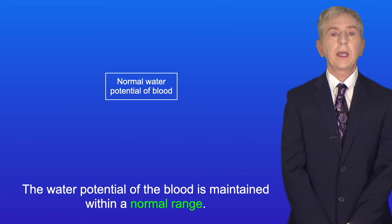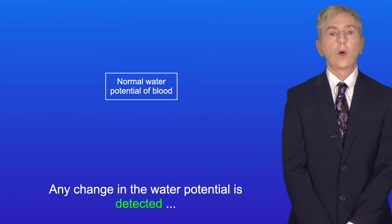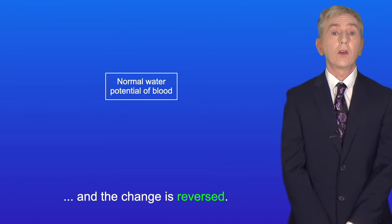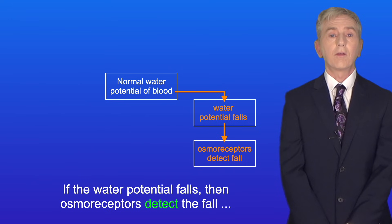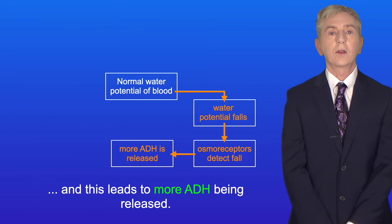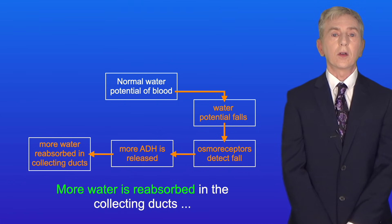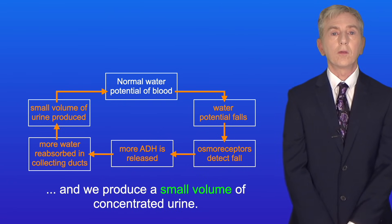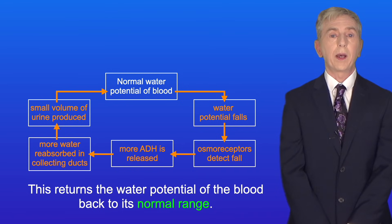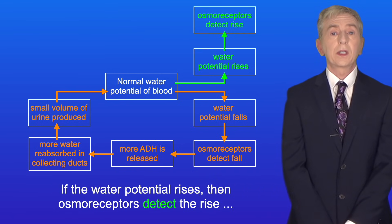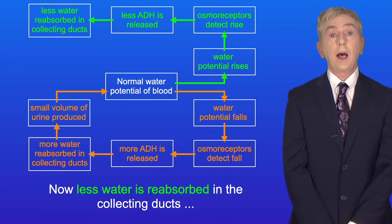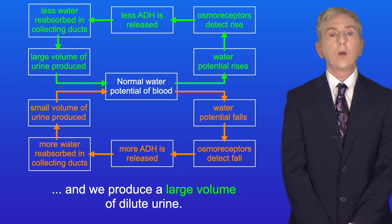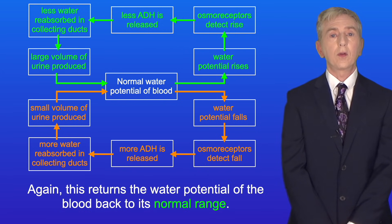The water potential of the blood is maintained within a normal range — any change in the water potential is detected and the change is reversed. To summarize: if the water potential falls, osmoreceptors detect the fall and this leads to more ADH being released. More water is reabsorbed in the collecting ducts and we produce a small volume of concentrated urine, returning the water potential of the blood back to its normal range. If the water potential rises, osmoreceptors detect the rise and this leads to less ADH being released. Less water is reabsorbed in the collecting ducts and we produce a large volume of dilute urine — again returning the water potential of the blood back to its normal range.